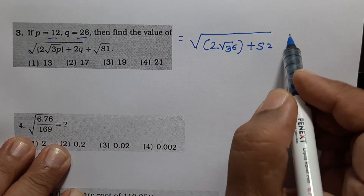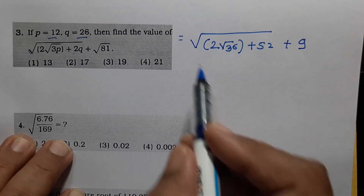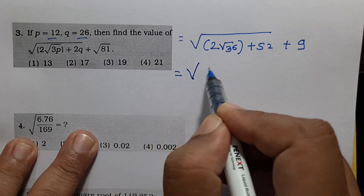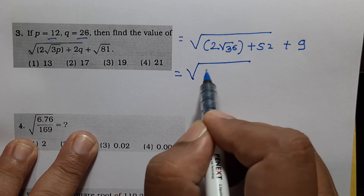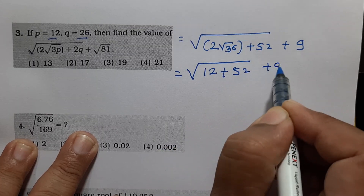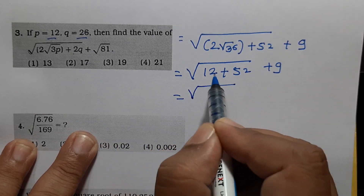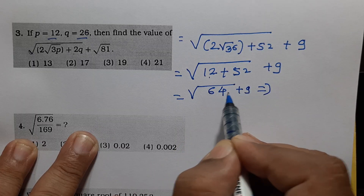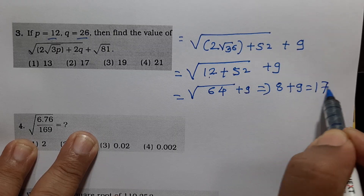Continuing: square root of 81 equals 9. So the bracket gives 6 plus 52 plus 9 equals... wait, evaluating: 6 into 2 equals 12, plus 52 plus 9. Inside the bracket: square root of 36 plus 52 equals square root of 64 equals 8. Then 8 plus 9 equals 17. Answer is 17. Option number 2.